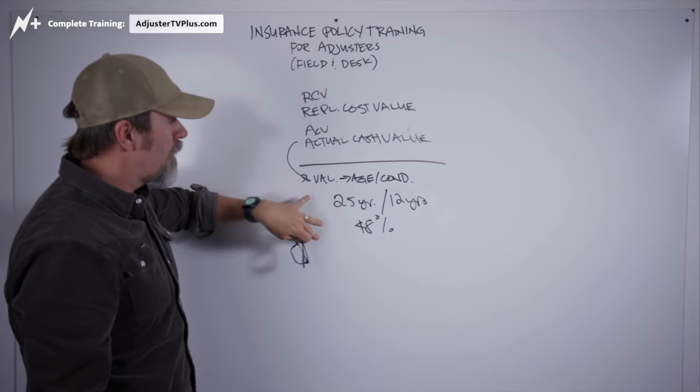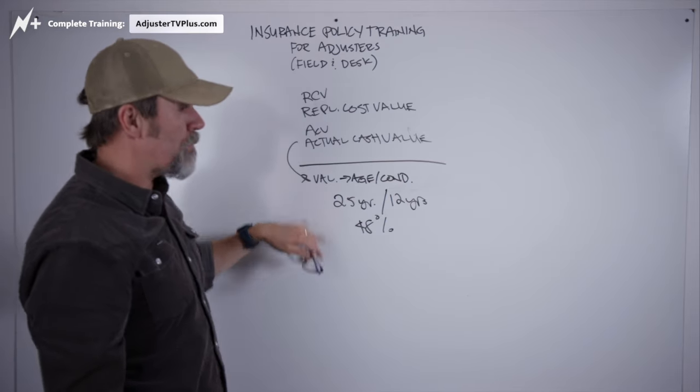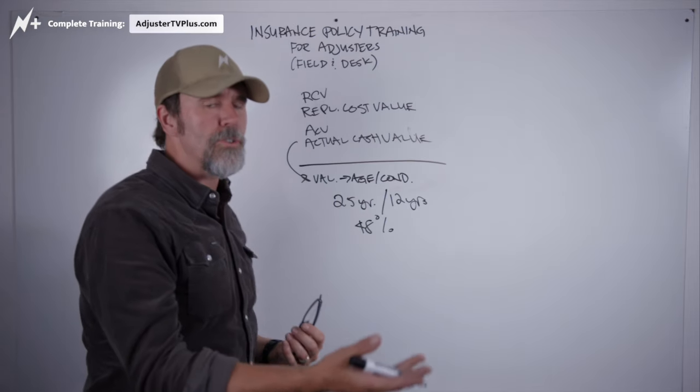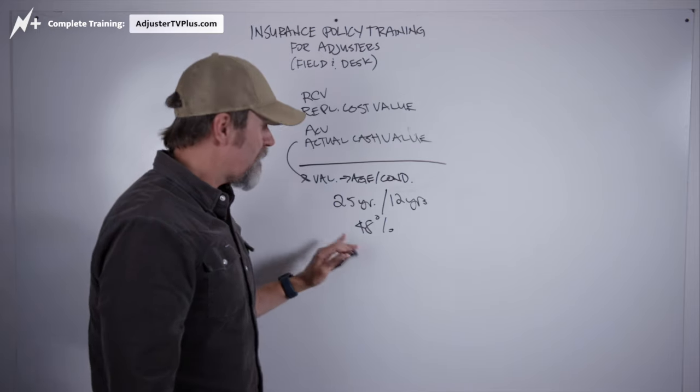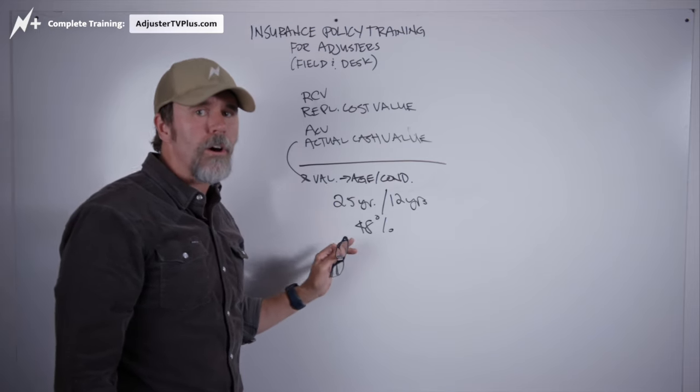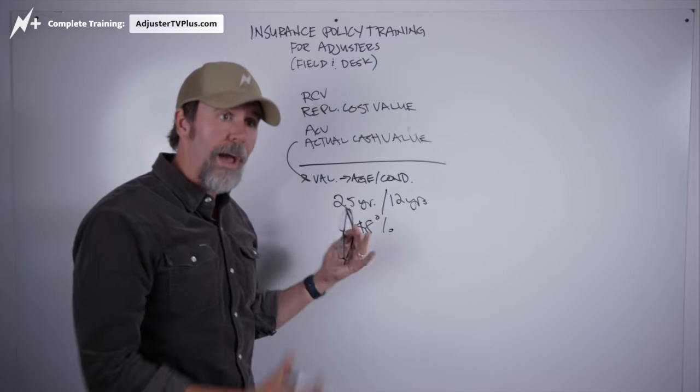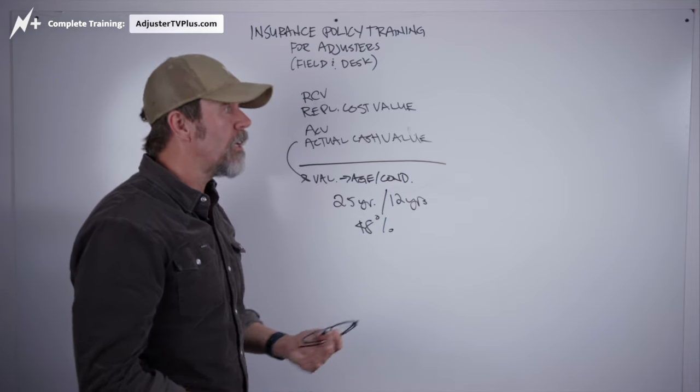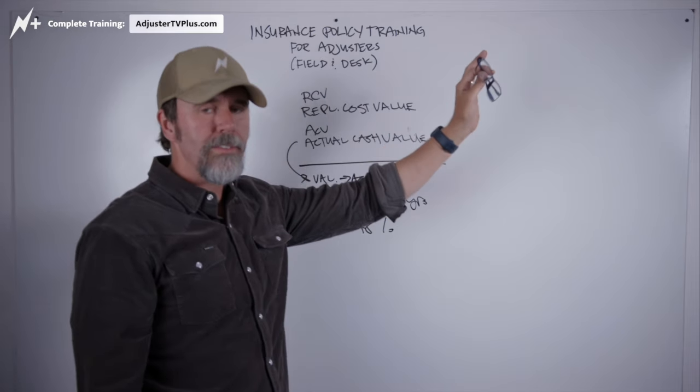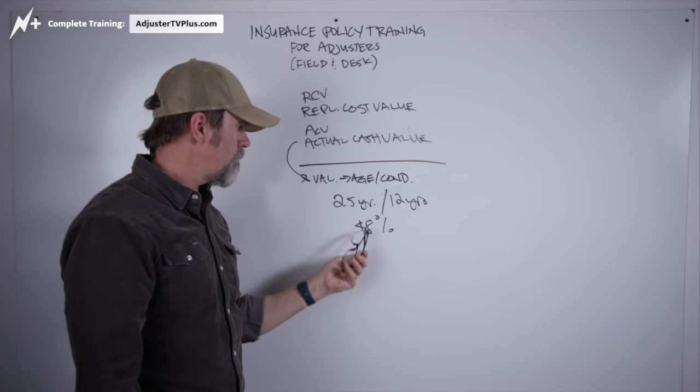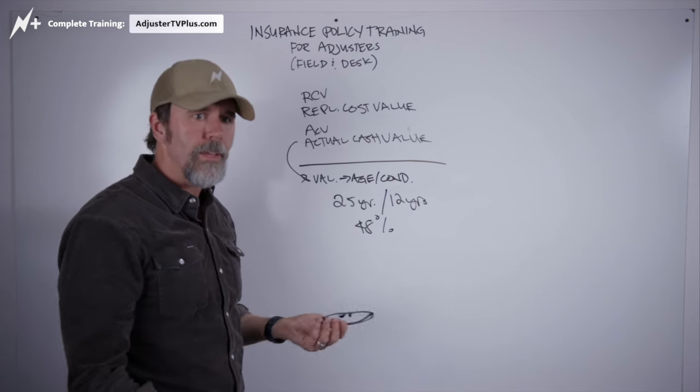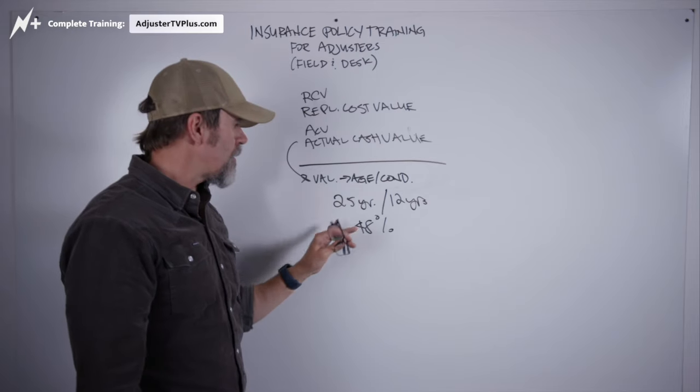But in order, the way we settle claims is that we have to pay you in two payments. We pay you an amount to get you started. And then once you have that work completed, we'll send you the rest of the money. The first payment is basically based on what you have on the house right now. So if you didn't do the work, we're paying you for the value of what's existing on the house right now. And we do it by kind of by a straight line, the age. The aging condition, but the age mainly.